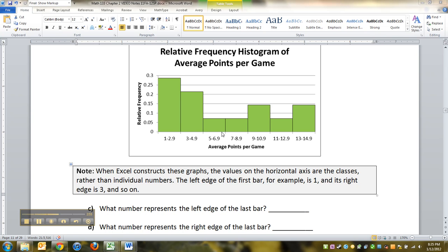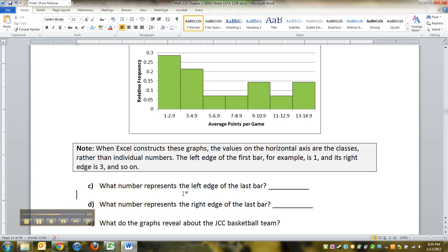This one right here is five. This one's seven and so on. And that means this over here is 15 because this one's 13, right? So what number represents the left edge of the last bar? So this is the last bar right here. Its left edge is the number 13, right here, that edge right there, that line.